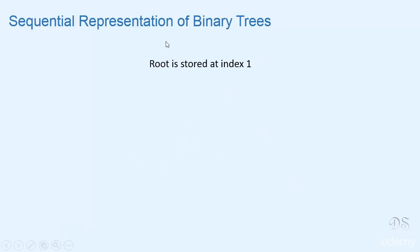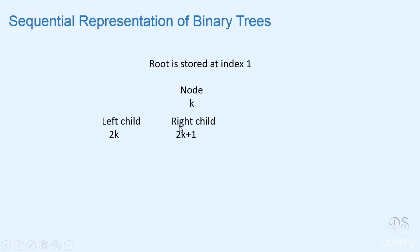We have stored our root node at index 1 of the array. So if a node is stored at index k of the array, its left child is stored at index 2k, its right child is stored at index 2k plus 1, and the parent is stored at index floor of k divided by 2 of the array.